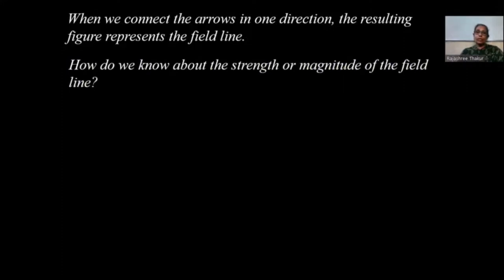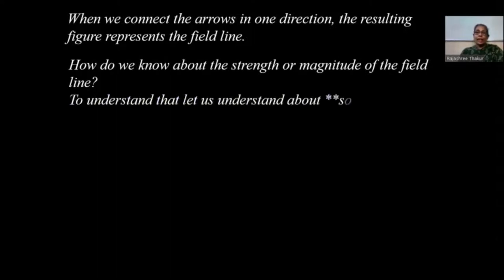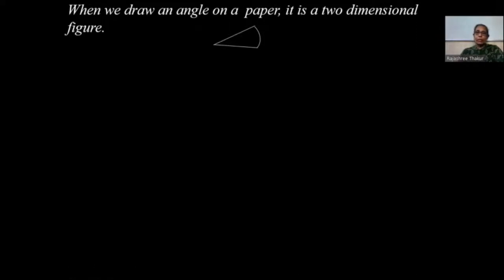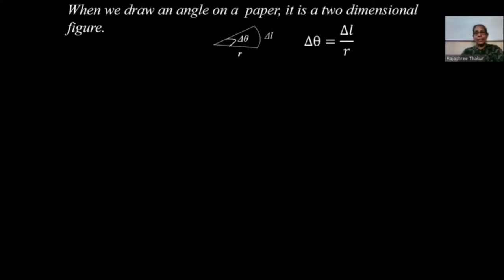Now how do we know about the strength once we join vectors into lines? To understand that, let us understand solid angle. When we draw an angle on paper, it is a two-dimensional figure — a length delta L subtends an angle at a point. This is a plane angle, and delta theta equals delta L divided by R.